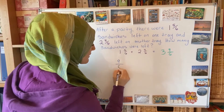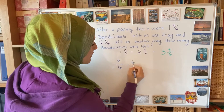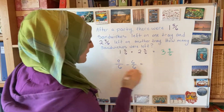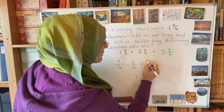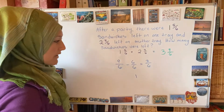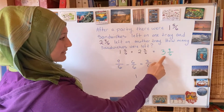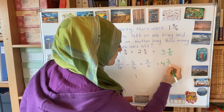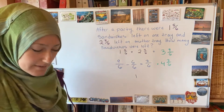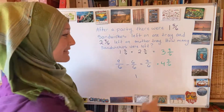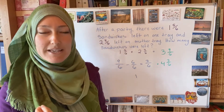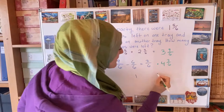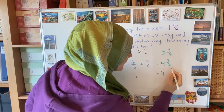So 9 sixths — I'm going to take away the whole that's hiding in there. There's one whole: 6 sixths. And what am I left with? 3 sixths. I give that whole 1 to the whole number. So your answer becomes 4 and 3 sixths. But you're still not done — you can reduce and simplify it. So your final answer would be 4 and a half.